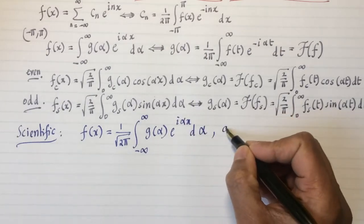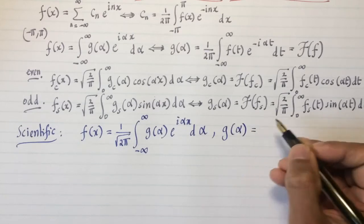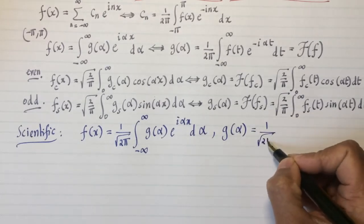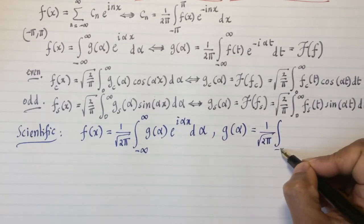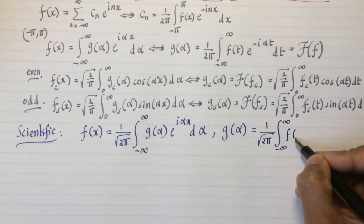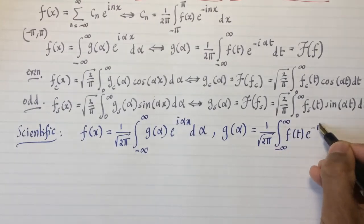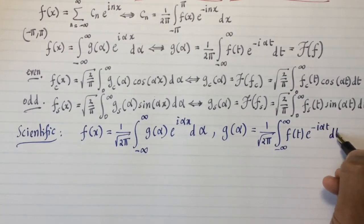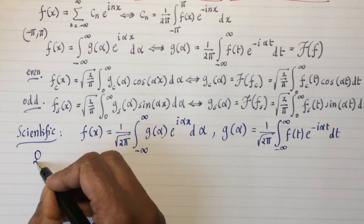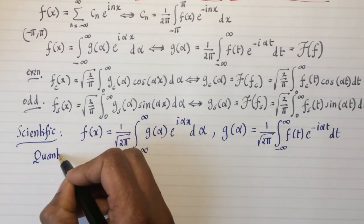If you do that, then g of alpha turns out to also be 1 over root 2 pi, the integral from minus infinity to infinity, f of t, e to the minus i alpha t dt. This is the normalization used in quantum mechanics.